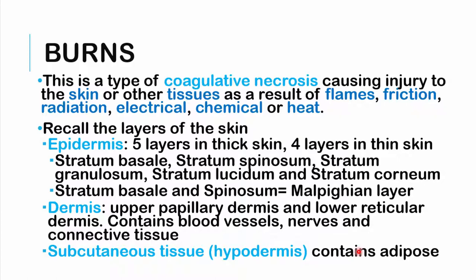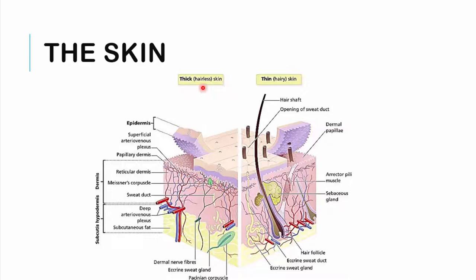Here is a picture comparing thick skin, which is hairless, versus thin skin which contains hair. We can see the epidermis with five layers, the dermal-epidermal junction, the superficial papillary dermis, the reticular dermis, sensory receptors such as Meissner's corpuscles, sweat ducts, blood vessels, nerves, and subcutaneous tissue. Thin skin has the same layers but lacks the stratum lucidum and includes the pilosebaceous apparatus with a sebaceous gland and hair follicle.